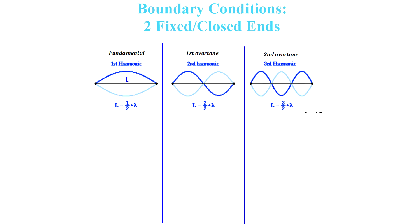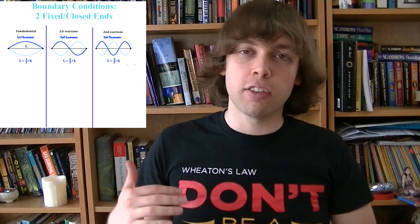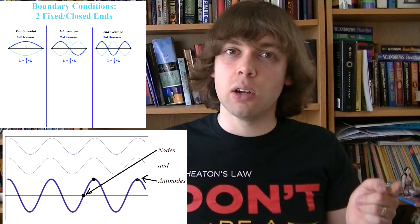The standing waves created in these instruments look different depending on those boundary conditions — whether they have closed or open ends. An instrument like a guitar with two fixed ends produces standing waves where the ends contain the nodes. A fixed end will always have a node at its boundary, and if the ends have to contain nodes, these are the only possible waves that could actually fit on the string. You could continue this pattern on and on forever as long as the two ends contain nodes.